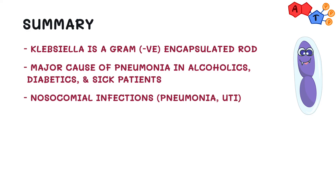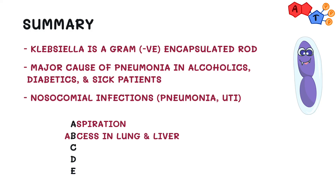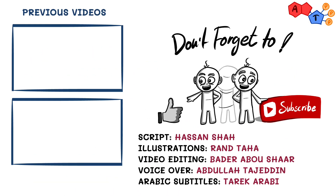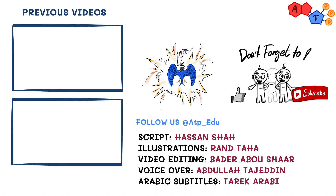A helpful mnemonic for Klebsiella is ABCDE: A for aspiration, B for abscess in lung and liver, C for currant jelly sputum, D for diabetes, and E for ethanol abuse. That's it for Klebsiella — we hope you found it beneficial. Don't forget to like, share, and subscribe to receive our latest explanations, and as always, thanks for watching.